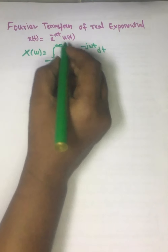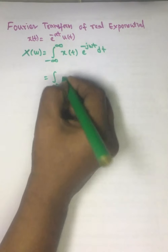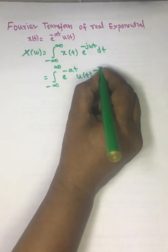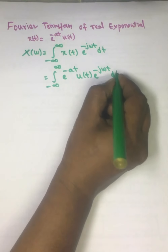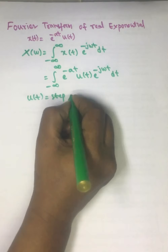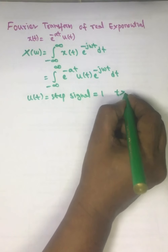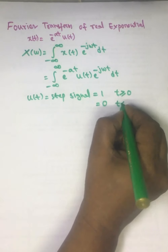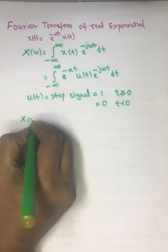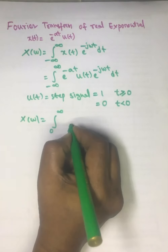In place of x(t), we substitute e^(-at)u(t). It can be written as the integral from minus infinity to plus infinity of e^(-at)u(t) e^(-jωt) dt. We know that u(t) is a step signal — it has value 1 if t is greater than or equal to 0, and value 0 for t less than 0.